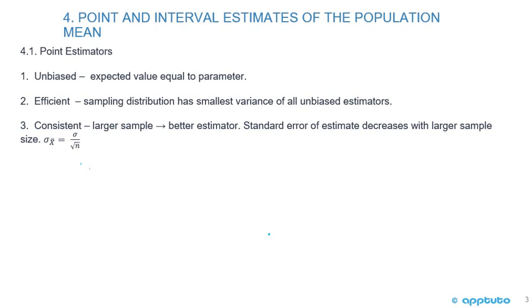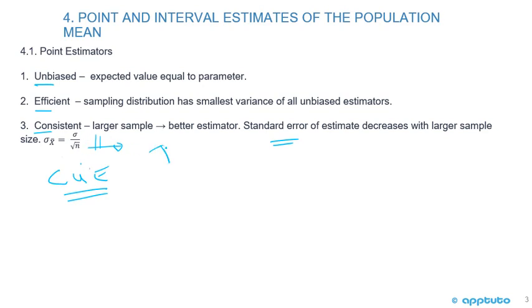The LOS is Describe Desirable Properties of an Estimator, and there are three. The point estimator should be unbiased, should be efficient, and should be consistent. This is one of the examples where you want to memorize a mnemonic — maybe make the word CUE: consistent, unbiased, and efficient. The standard error of the estimate decreases with larger sample size, because if we look at the formula for the standard error of the estimate, it's the standard deviation divided by the square root of N. So as we increase N, we're increasing the denominator and decreasing the standard error.